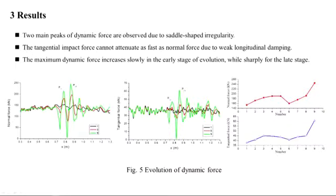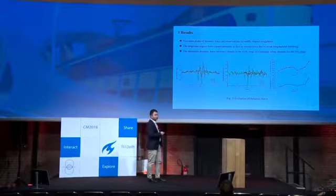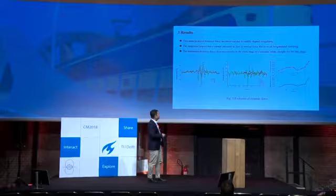This is not the case in the vertical direction, where we have suspension, fastening, and ballast. This lasting vibration may be the cause of some damage, such as corrugation after the rail weld.